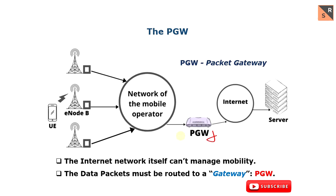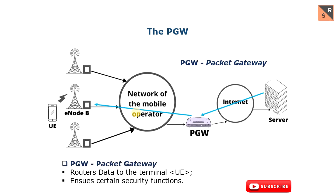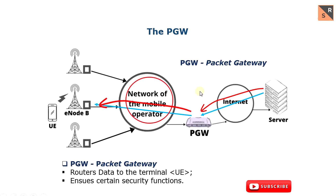The solution adopted for 4G networks was to route packets for mobile subscribers to a single network gateway called the PGW, or Packet Gateway. That means that when I consult a server, a packet requesting a piece of a website will be transmitted through the internet to my mobile operator's PGW, then from the PGW to the base station using the mobile operator's own IP network.